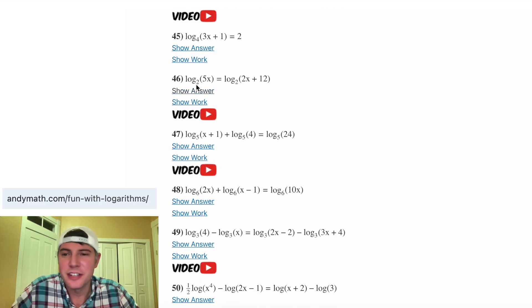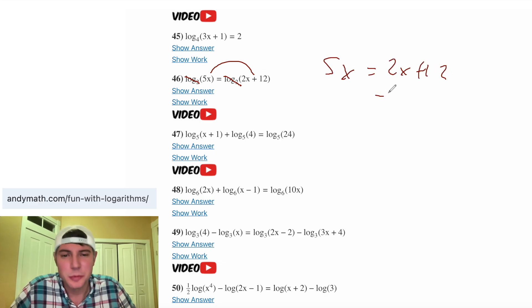Now with 46, you have a single log on both sides. If you ever have a single log with the same base on both sides, you can just drop the log and set these equal to each other. So this would be 5x equals 2x plus 12. Subtract 2x from both sides. 3x equals 12. Divide both sides by 3. You get x equals 4. So this one should be 4.